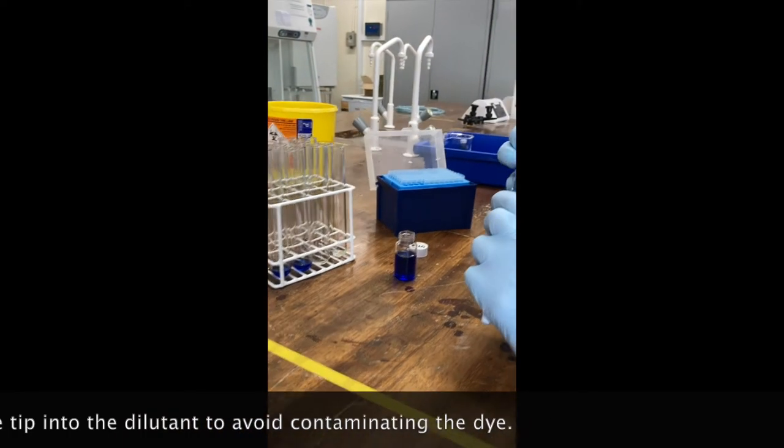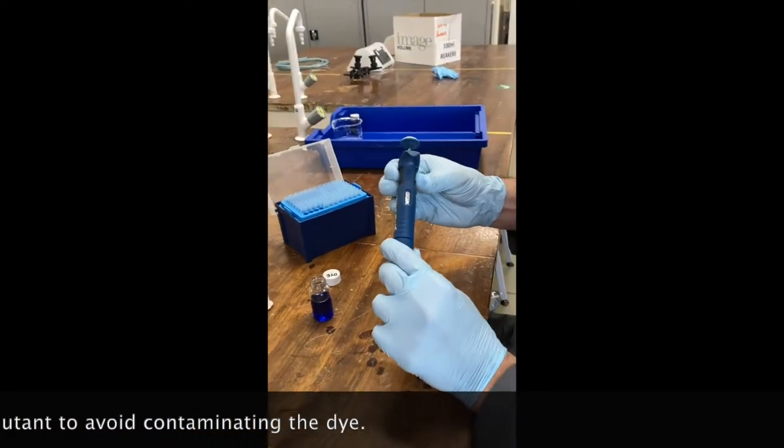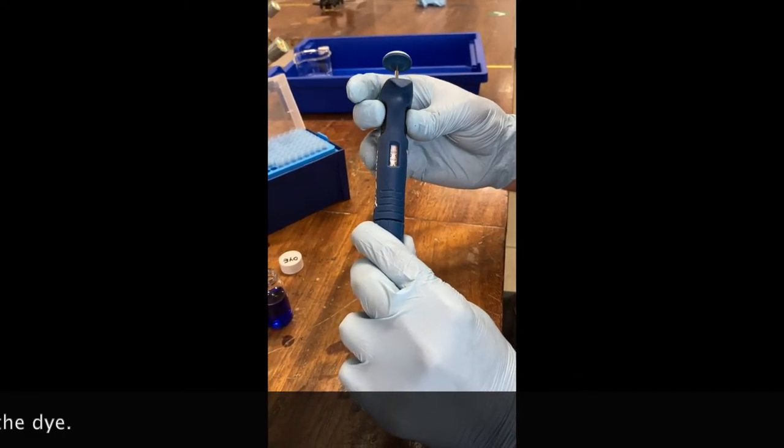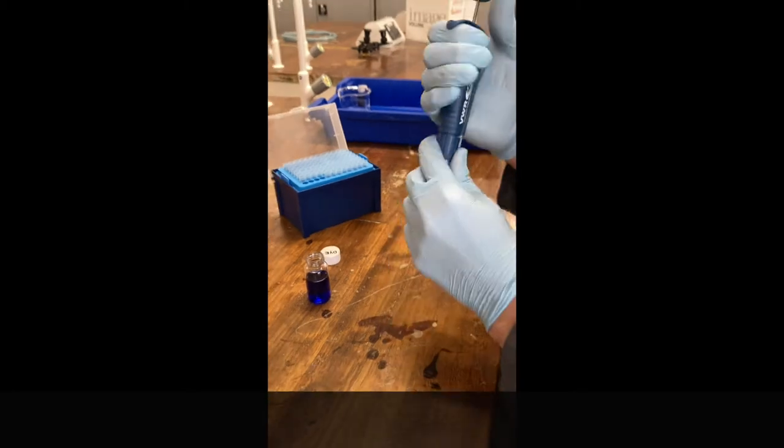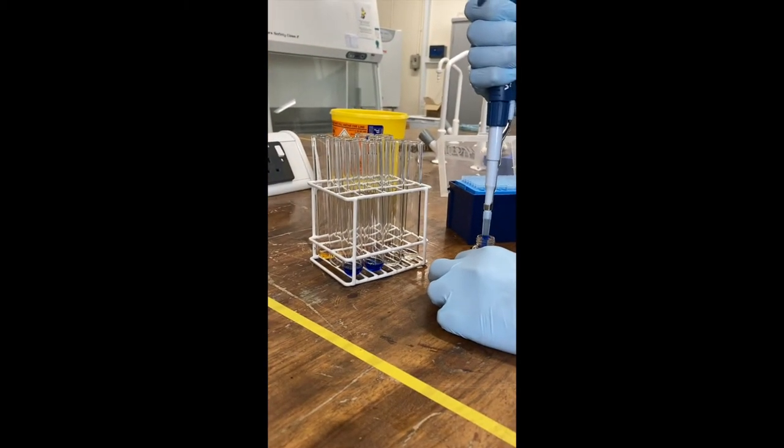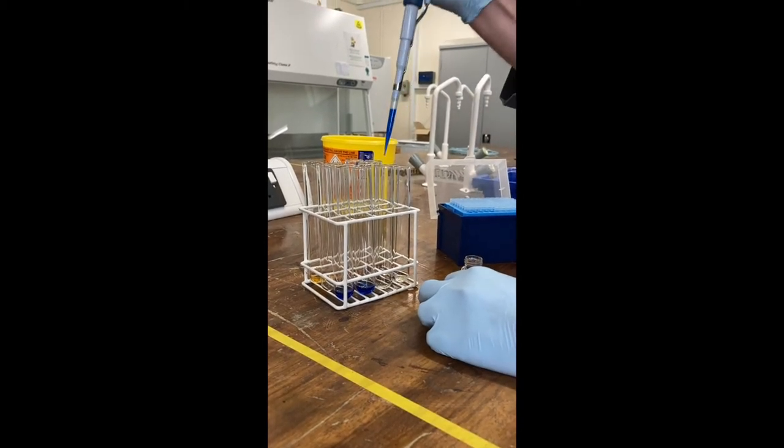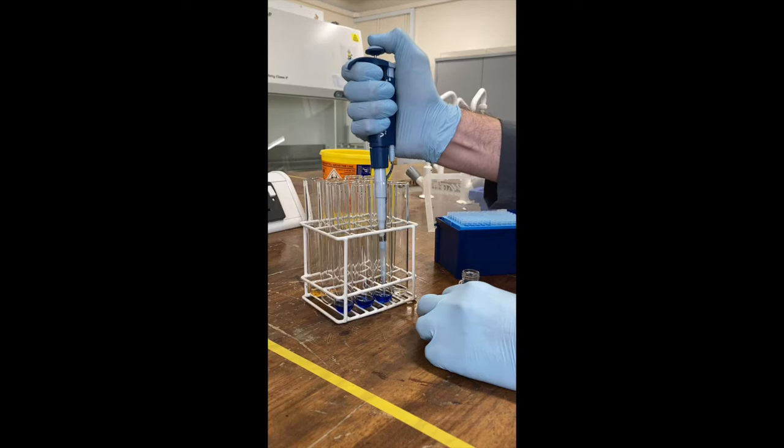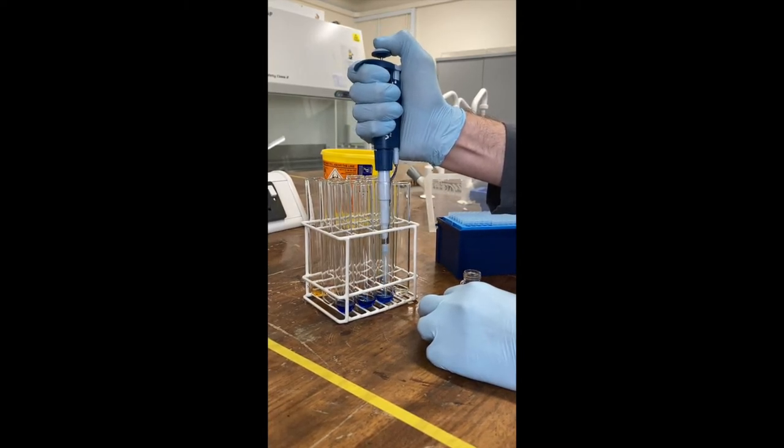For the second tube, I'm going to have one mil of water. So I'm going to need to put one mil of my standard solution in. So that's 1000, which is one mil. Pipette up. And pipette one mil in. Again, going down to the second stop. You want to make sure you mix it carefully.